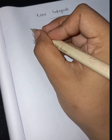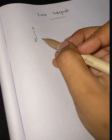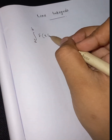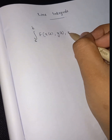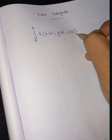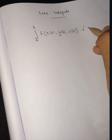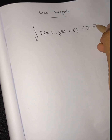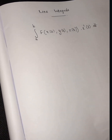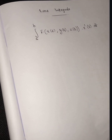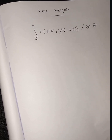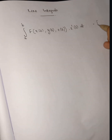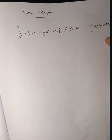The line integral with respect to x is: integral from a to b of f(x(t), y(t), z(t)) times x'(t) dt. This represents the integral of f along curve C from a to b with respect to x — that is, the integral of f(x, y, z) dx.